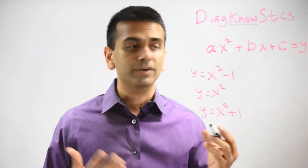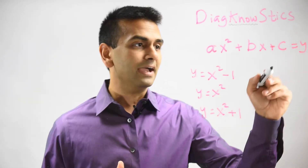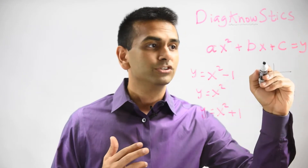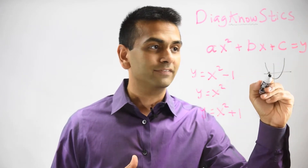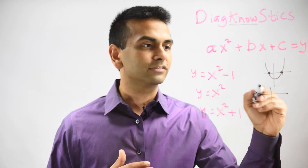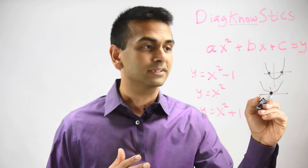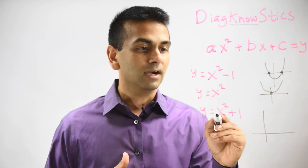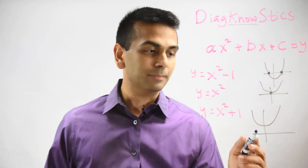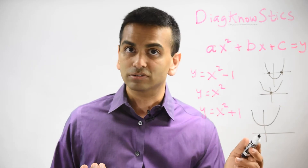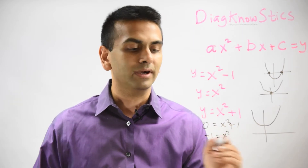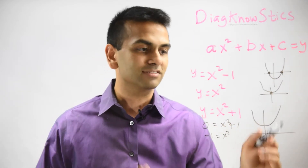Typically a quadratic has two solutions, but not always. For x squared minus 1, a regular parabola shifted one unit down, there are two x-intercepts. For y equals x squared, there's only one solution at x equals 0 — it's tangent to the x-axis. For x squared plus 1, the parabola is shifted up one unit and never touches the x-axis, so there are no real solutions — setting it equal to zero gives negative 1 equals x squared, and you can't take the square root of a negative number.